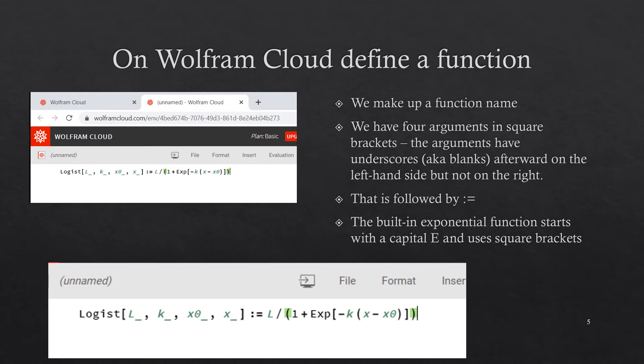So it is the parameter l or argument l divided by a large set of parentheses: 1 plus the exponential function. In Mathematica or Wolfram Cloud, the exponential function is a capital E, small x, small p, square bracket. In Mathematica the pre-existing functions tend to be started with a capital letter and functions use square brackets.